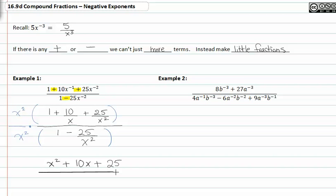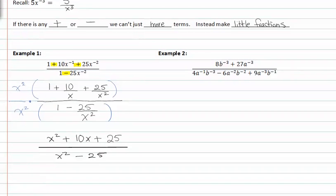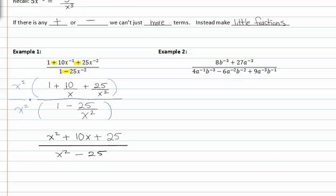In the denominator, I have x squared multiplied by one, which gives me x squared. And I'm multiplying x squared to negative twenty-five over x squared as well, which allows me to divide out the x squared. From here, I can factor my numerator and denominator and see if anything divides out.